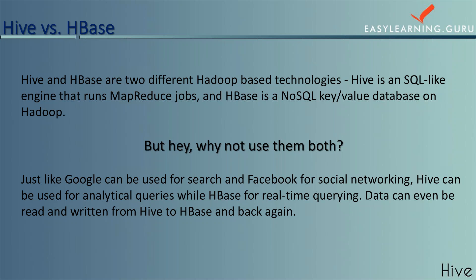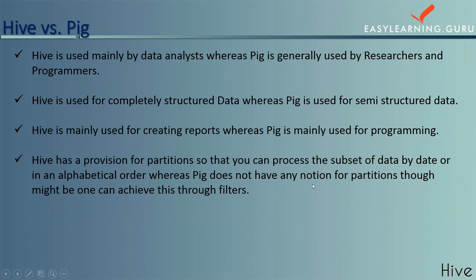HBase is a column-oriented storage database — it is all about performance and is widely used as a backend for high-throughput applications. You can also write MapReduce jobs against HBase. HBase can be used similarly to how Google uses it for search and Facebook for social networking. In summary, Hive is used for analytics while HBase is used for real-time queries.